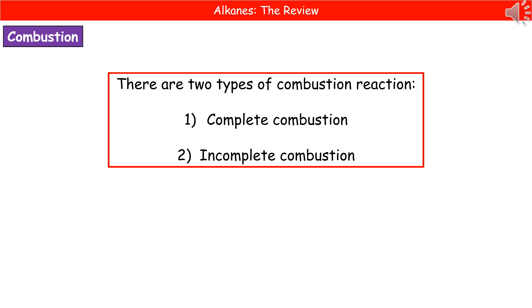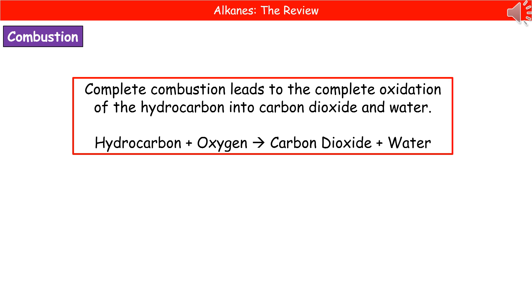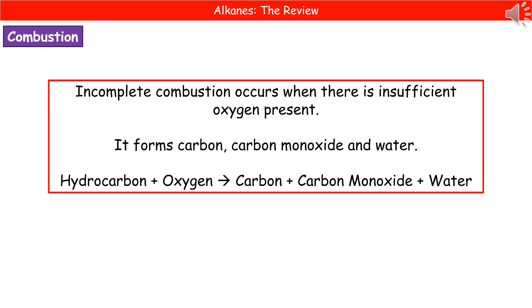In terms of the reactions of alkanes, the first kind we'll consider are combustion reactions. There are two types: complete combustion and incomplete combustion. Complete combustion leads to the complete oxidation of the hydrocarbon into carbon dioxide and water — hydrocarbon plus oxygen makes carbon dioxide and water. Incomplete combustion occurs when there is insufficient oxygen present. With not enough oxygen to carry out complete oxidation, three products are formed: carbon, carbon monoxide, and water — hydrocarbon plus oxygen makes carbon plus carbon monoxide plus water.